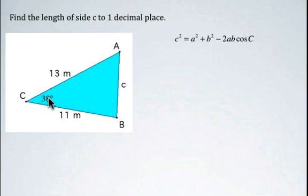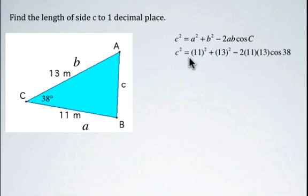We can use this version of the cosine law to find the side opposite the angle. We'll substitute the values we're given: a is side a which is 11, and b is side b which is 13. So we substitute into our equation. c squared equals 11 squared plus 13 squared minus 2 times 11 times 13 times cosine 38.